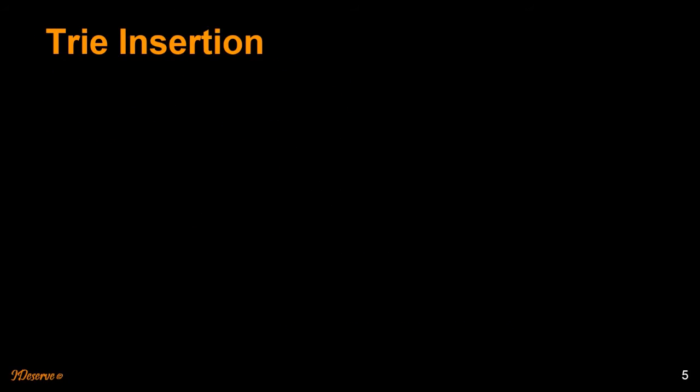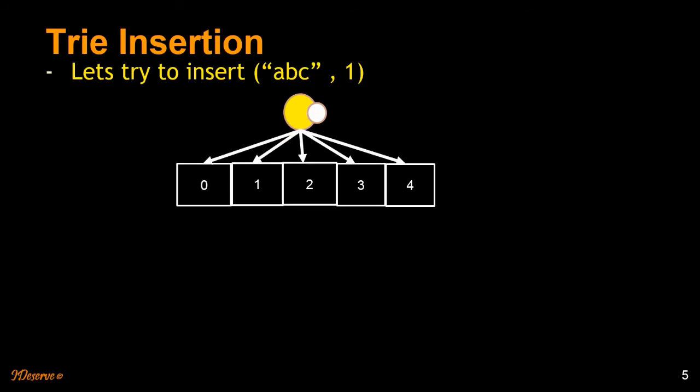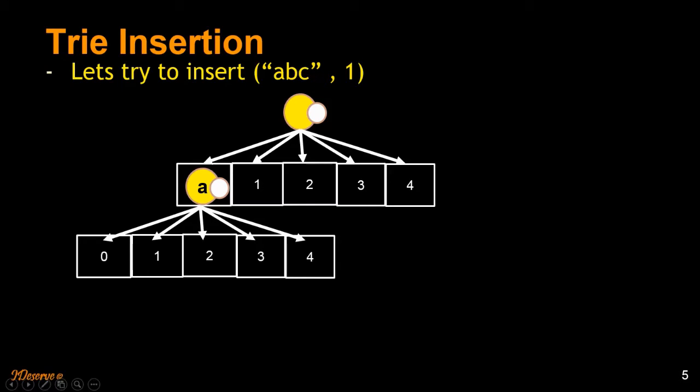Let's go ahead and try to understand how Trie insertion happens. Let's try to insert ABC, 1. So this is the root node which is empty. Root node will have 5 empty places where we can fill up the key letters. So what is the first key letter? A is the first key letter. So we initialize the first element of that array because that is the element which corresponds to A. Earlier this was empty. So we initialize it with this node A.